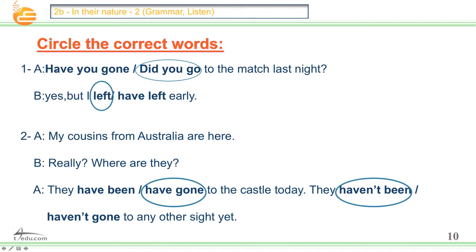Let's see. Number one: 'Did you go' — last night is the time expression everybody, so we use past simple. Yes, but 'I left' early. Number two: My cousins from Australia are here. Where are they? 'They have gone' to the castle today — they're still there, so use have gone, not have been. And 'they haven't been' to any other site yet — they didn't go there.